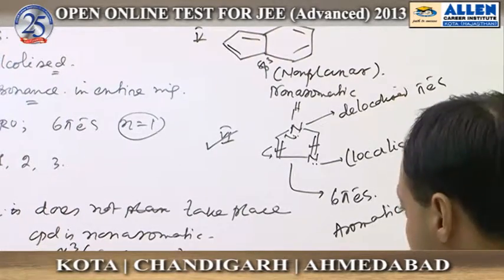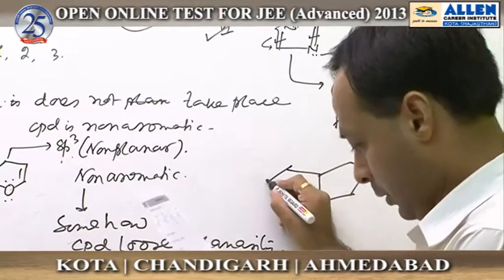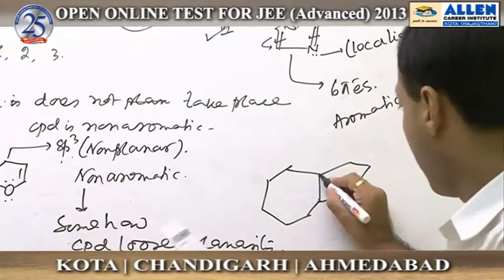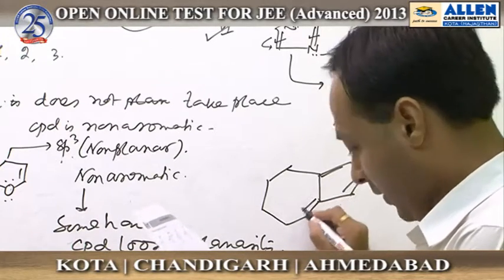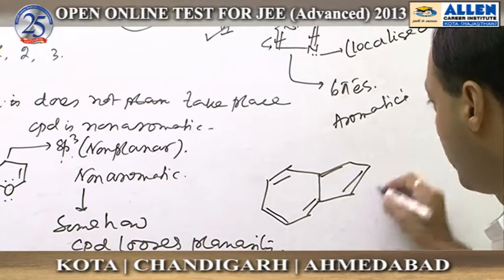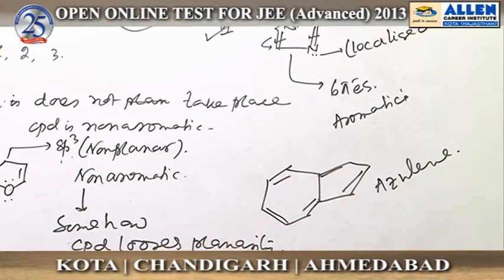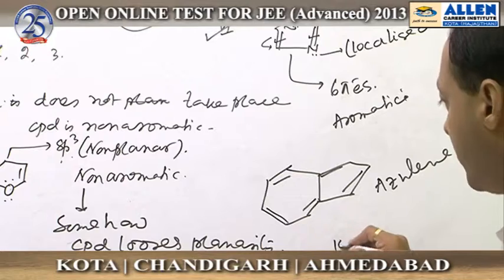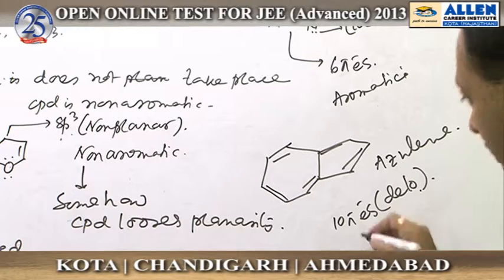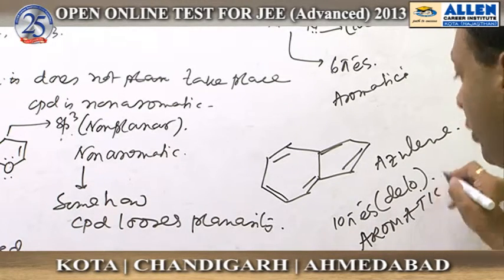Compound seven is a combination of a five-membered and a seven-membered ring with an alternating single bond–double bond conjugated system, commonly known as azulene. Considering the total pi electrons, it has ten pi electrons that are delocalized, it is planar, and it is an aromatic system.